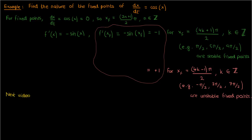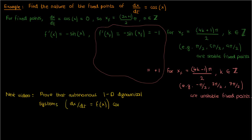In the next lesson, we're going to prove that autonomous one-dimensional dynamical systems like dx/dt = f(x) cannot give oscillatory solutions. I'd like to thank my patron Jacob Suarez for donating at the $5 level. If you're interested in becoming a patron, there's a link to my Patreon page in the description. If you enjoyed the video, feel free to like and subscribe. This is the Faculty of Khan signing out.